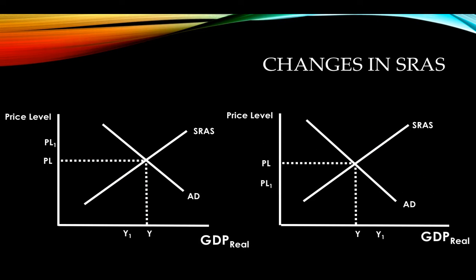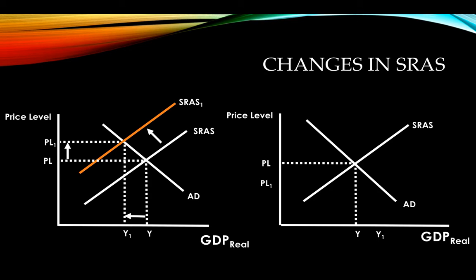Now let's look at changes in short-run aggregate supply — again, everything is labeled correctly. When short-run aggregate supply decreases, it shifts to the left. We draw our new short-run aggregate supply curve correctly labeled, show a new higher price level with an arrow indicating inflation, and a new output that is decreasing. For an increase in short-run aggregate supply — a shift to the right — we label the new curve, show the new equilibrium price level with a downward arrow, and the new equilibrium output with an upward arrow.